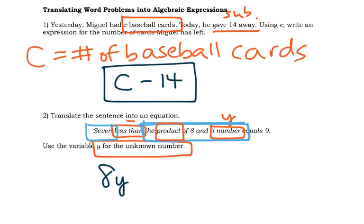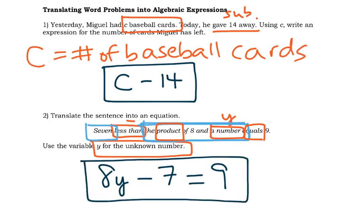Less than indicates subtraction. And what am I subtracting? The 7. And then I see another keyword here that says equals. Well that's a little self-explanatory, but that's just the equals sign. And then 9. So 7 less than the product of 8 and a number equals 9 is represented by this equation here: 8y - 7 = 9.